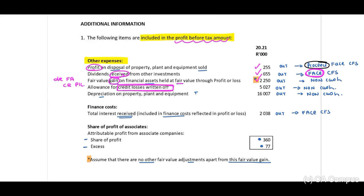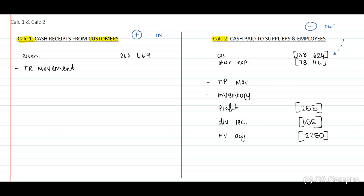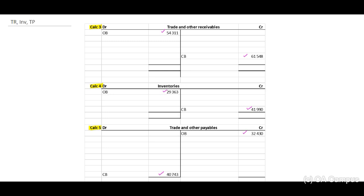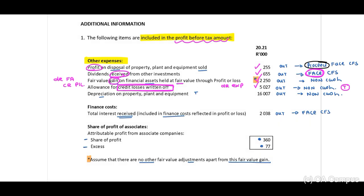Allowance for credit losses written off: since this is an allowance, it appears on the debit side as an expense in profit and loss. We need to add this back — include it as a positive. We add back the allowance for credit losses with a plus sign. In our trade receivables T-account we include the allowance for credit losses on the credit side, because allowing for the possibility of loss decreases our balance. Tick off 5,027.